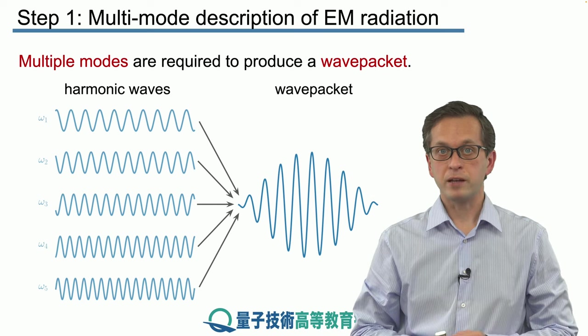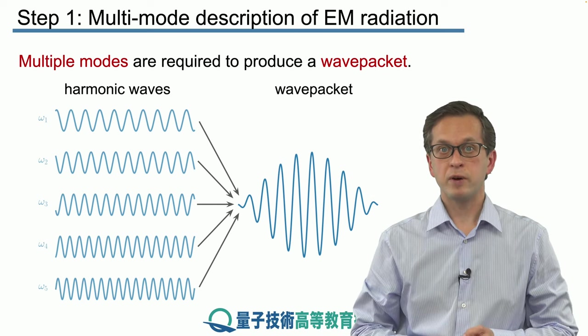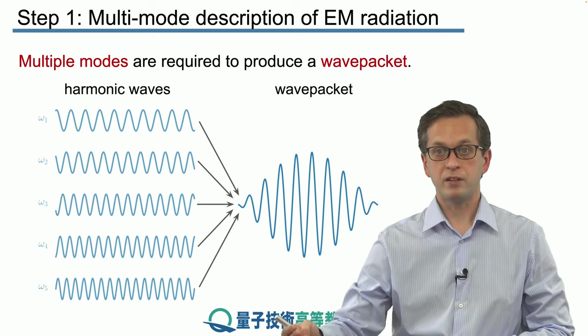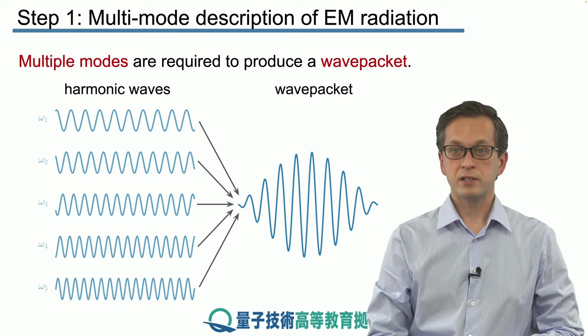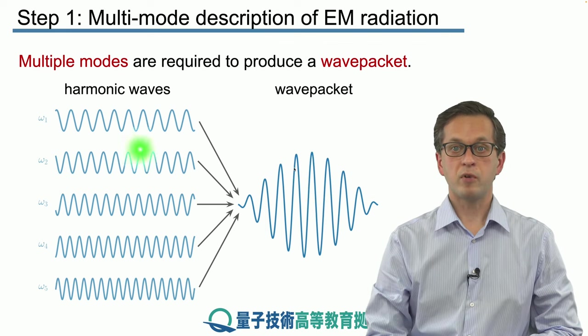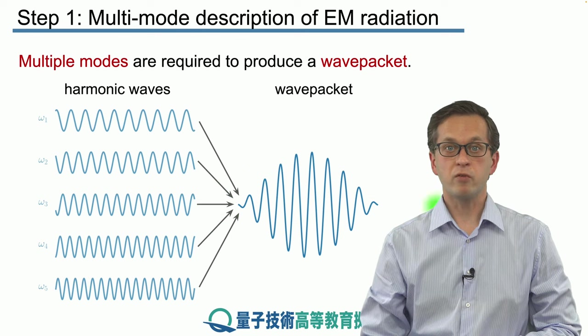However, wave packets of single photons must be produced by a source so they have a definite start and when we measure them they have a definite end. In other words we want to go from description of simple single harmonic waves into description of wave packets.